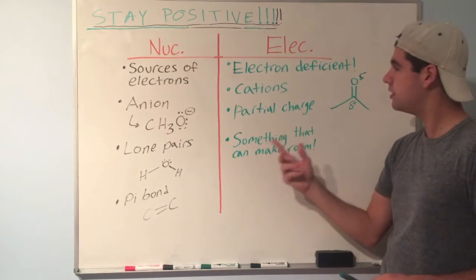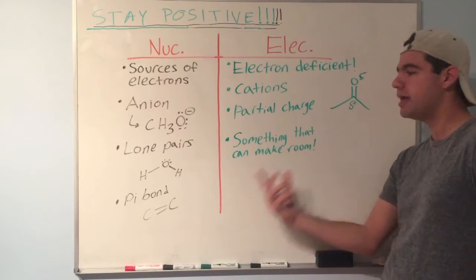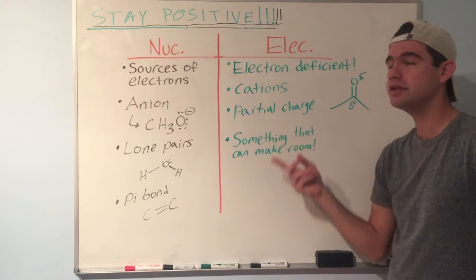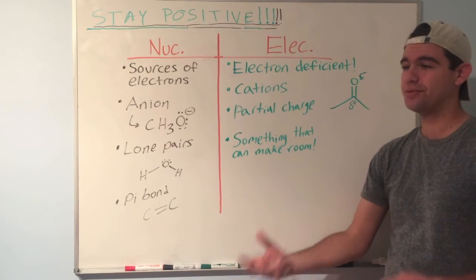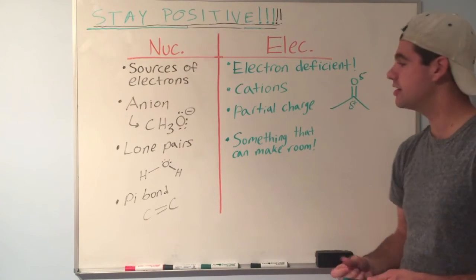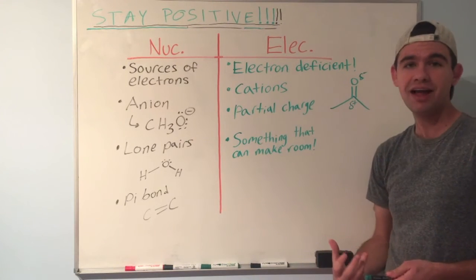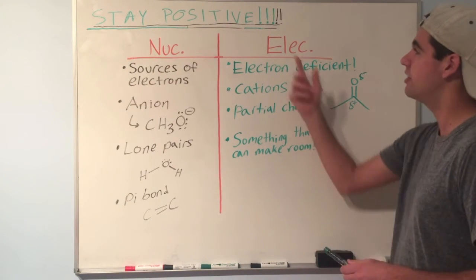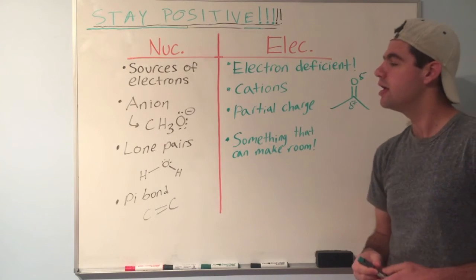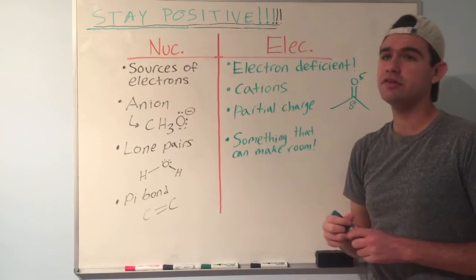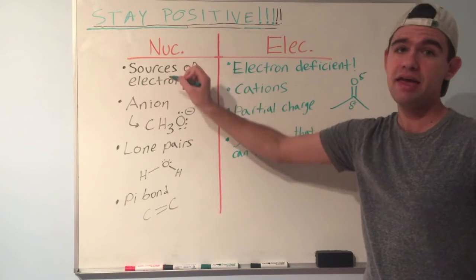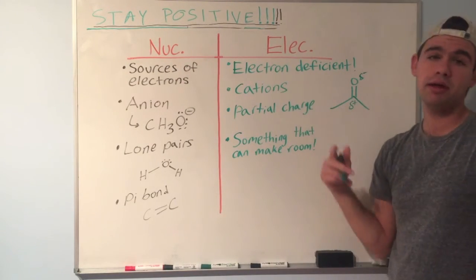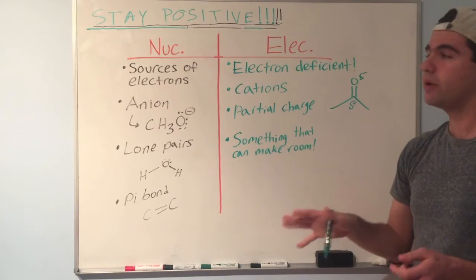And finally, another example of electrophiles is anything that can make room for more electrons. So it doesn't have to be fully positive or partially positive, but if it has room, like an empty orbital, for instance, to make room for more electrons, it tends to accept electrons, or it can accept electrons, and therefore act as an electrophile. By the way, another way to distinguish between these two, nucleophiles would be a Lewis base because it's donating the electrons, and an electrophile would be a Lewis acid, just another nuanced way to think of them.